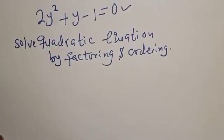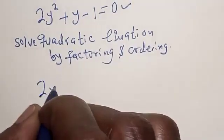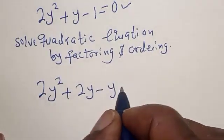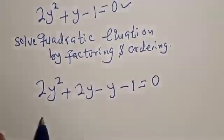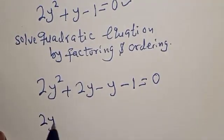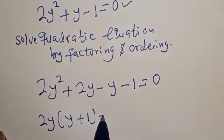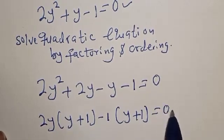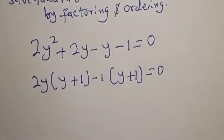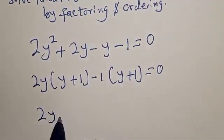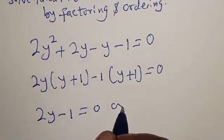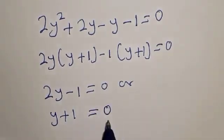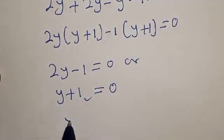We have 2y squared plus 2y minus y minus 1 is equal to 0. Here we have 2y into y plus 1 minus 1 into y plus 1 is equal to 0. Then 2y minus 1 is equal to 0 or y plus 1 is equal to 0.